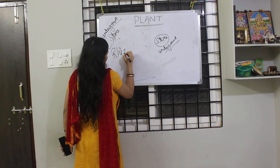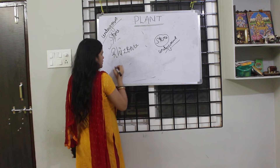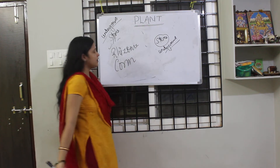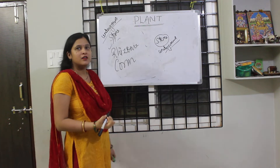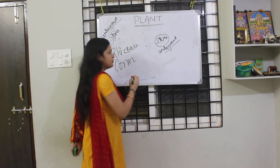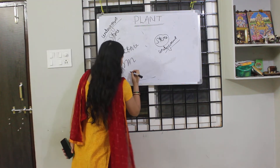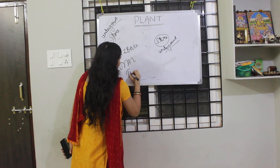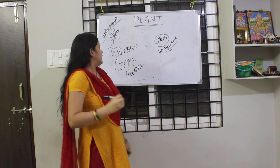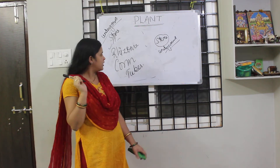There are four types of underground stems. The first one is rhizome, the second one is corm, the third is tuber, and the fourth is bulb. Do you know — is potato a stem or a root? It is a stem, an underground stem, and that is called a tuber.